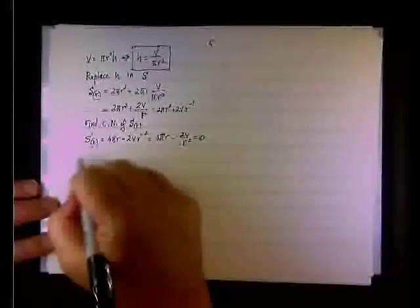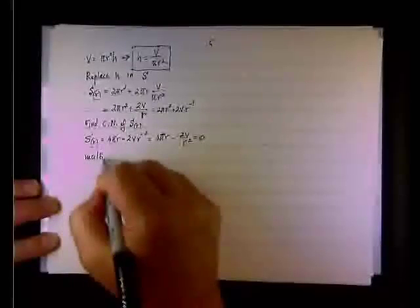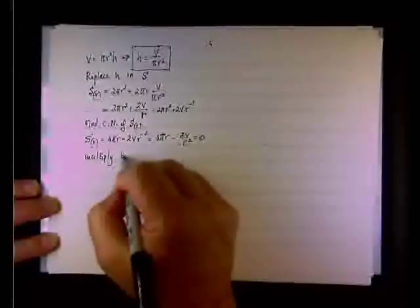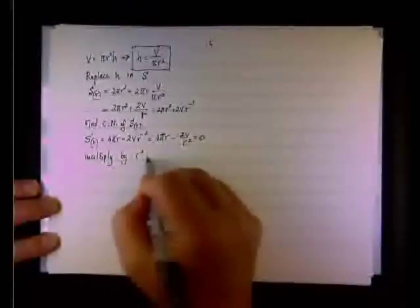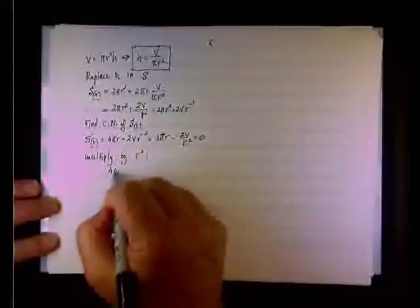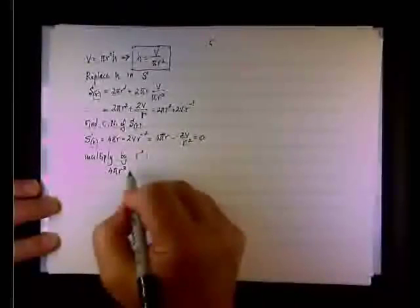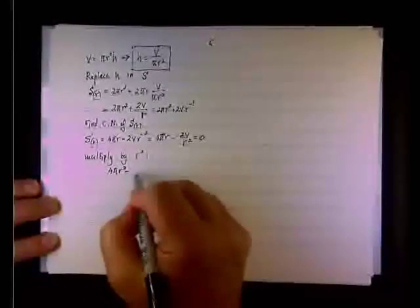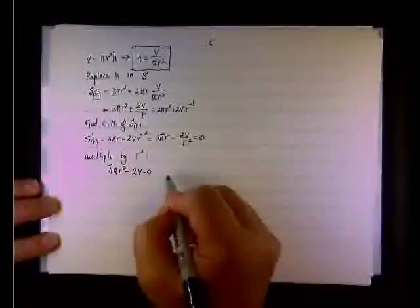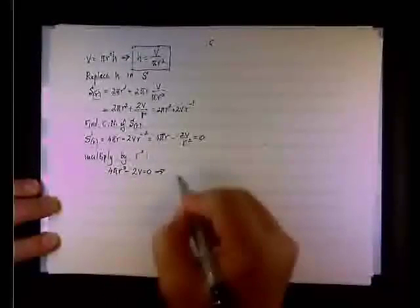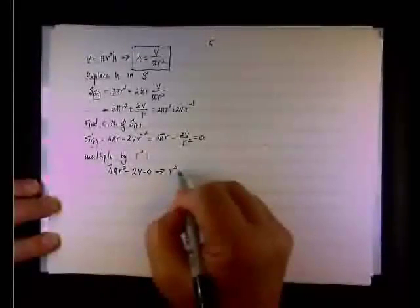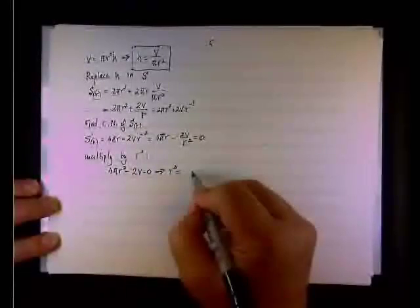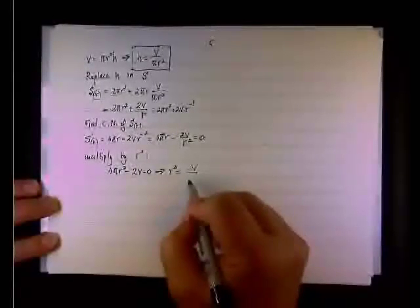Multiply by r squared. And get 4 pi r cubed minus 2V equal to 0. Or get r cubed equal to V divided by 2 pi.